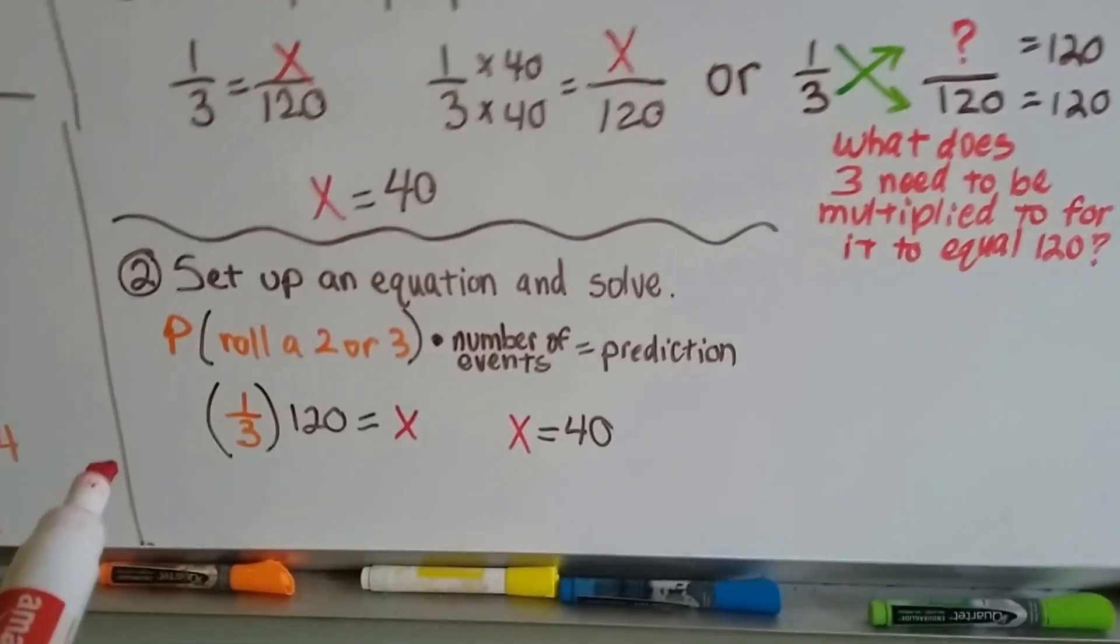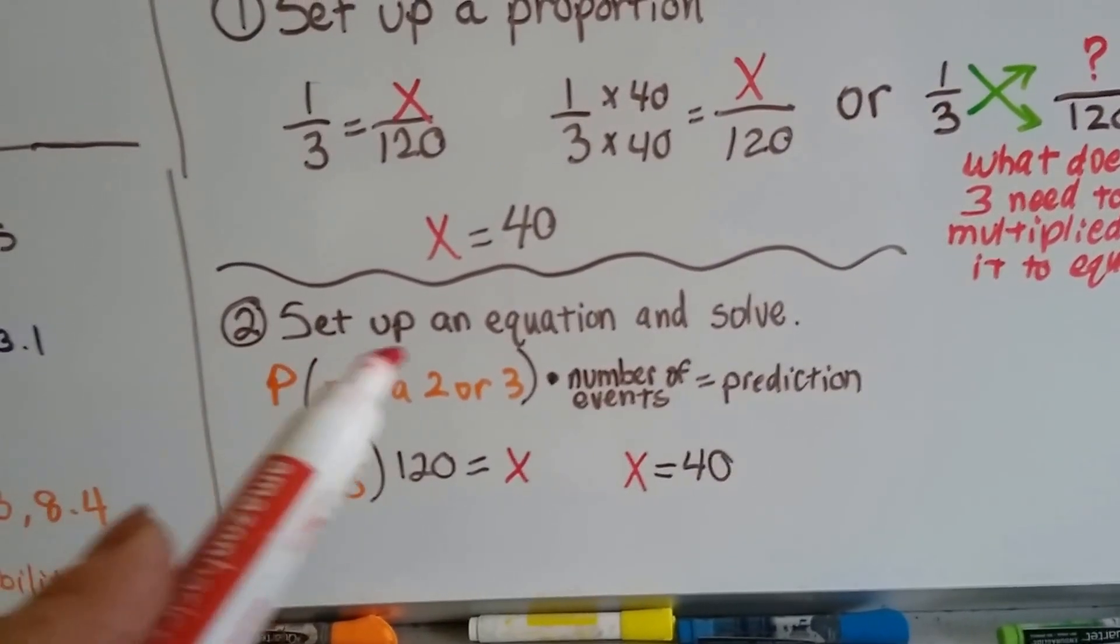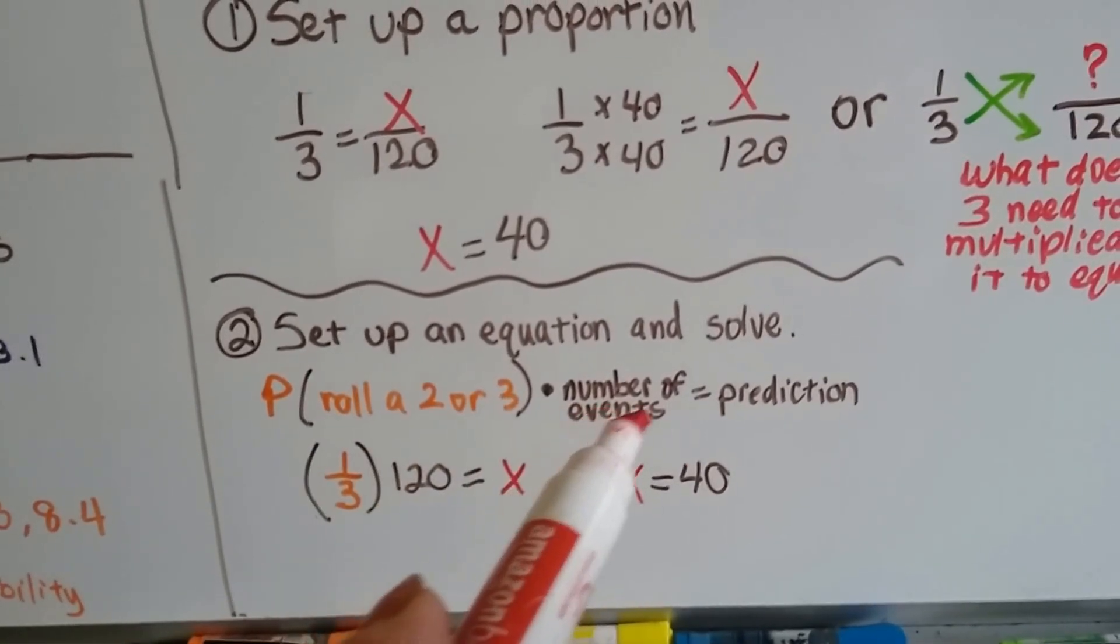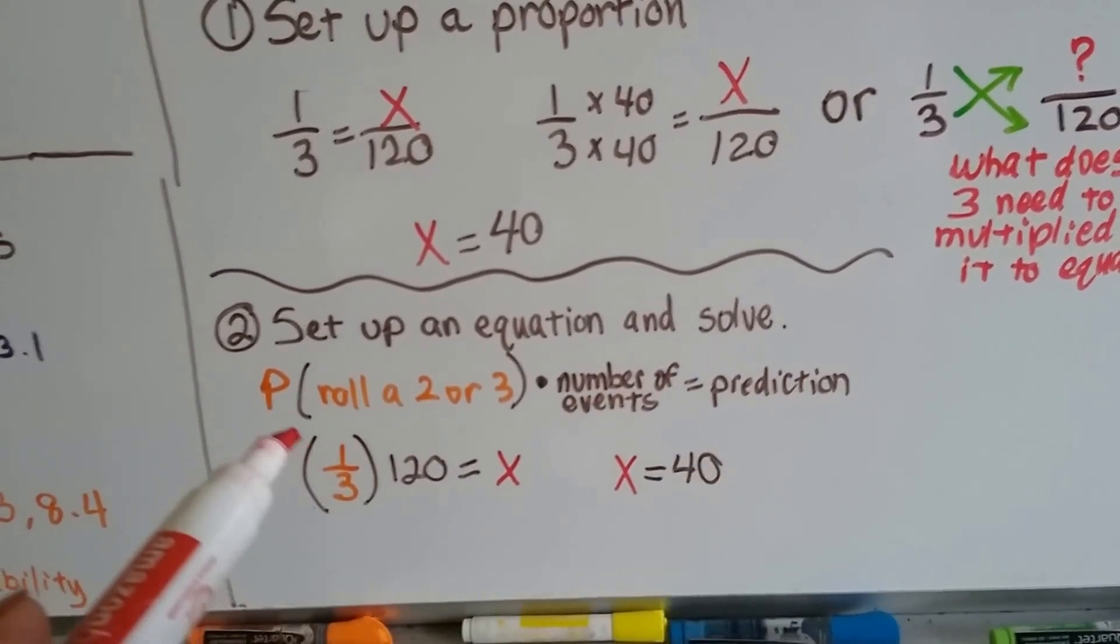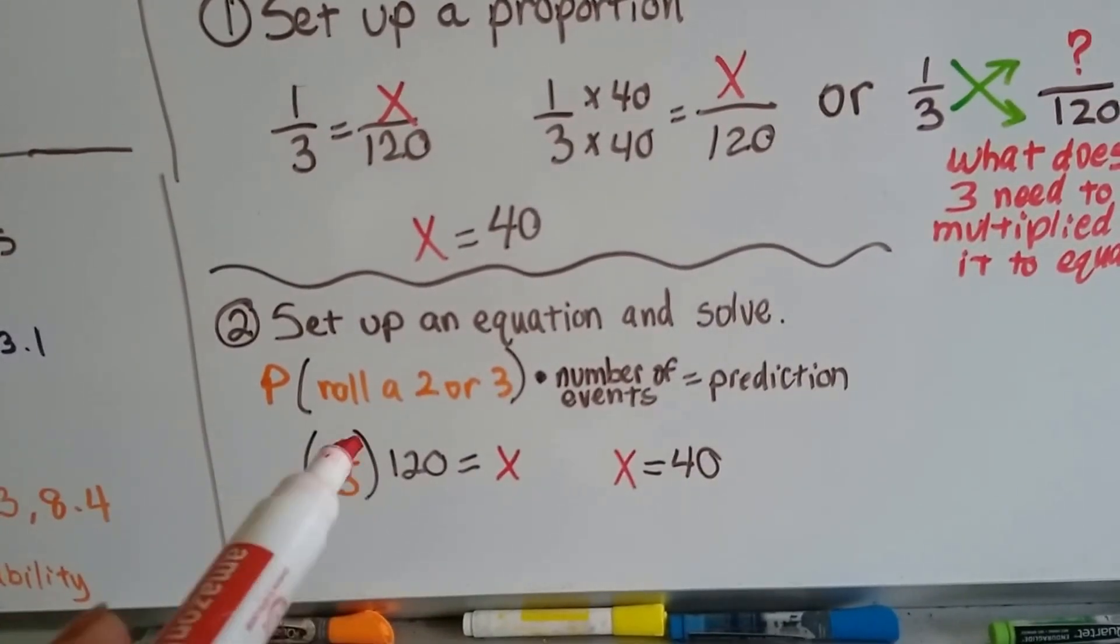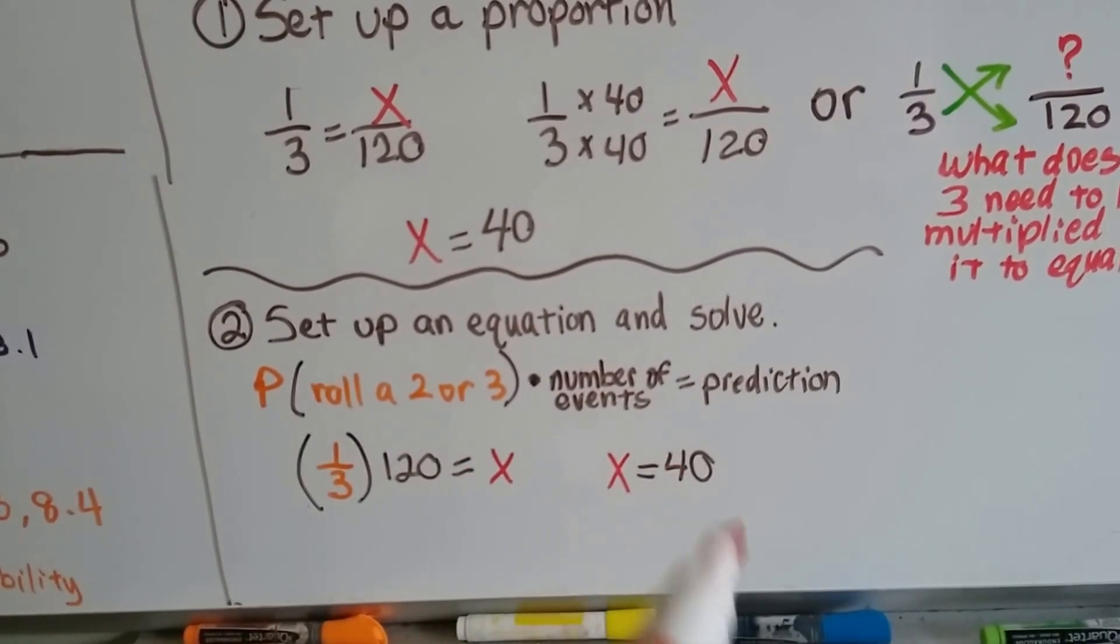The other way of doing it, method 2, is to set up an equation and solve it. P, the roll of a 2 or 3, the probability of rolling a 2 or 3 times the number of events, equals the prediction. So 1 third is the probability of rolling the 2 or 3 times 120 rolls equals x, so x equals 40.